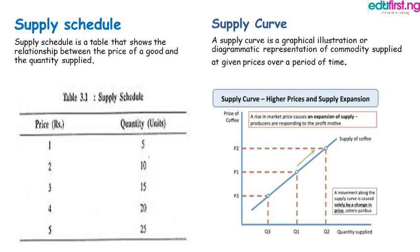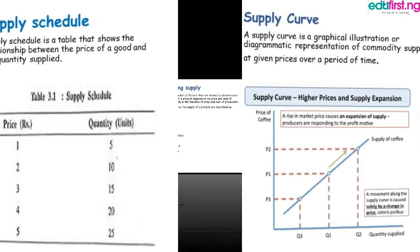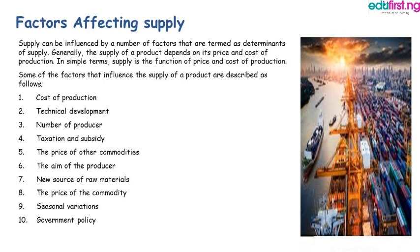The supply curve is a graphical illustration or diagrammatic representation of commodities supplied at a given price over a period of time. The supply curve slopes upwards, showing the willingness of producers or suppliers to produce more goods when there is an increase in price.